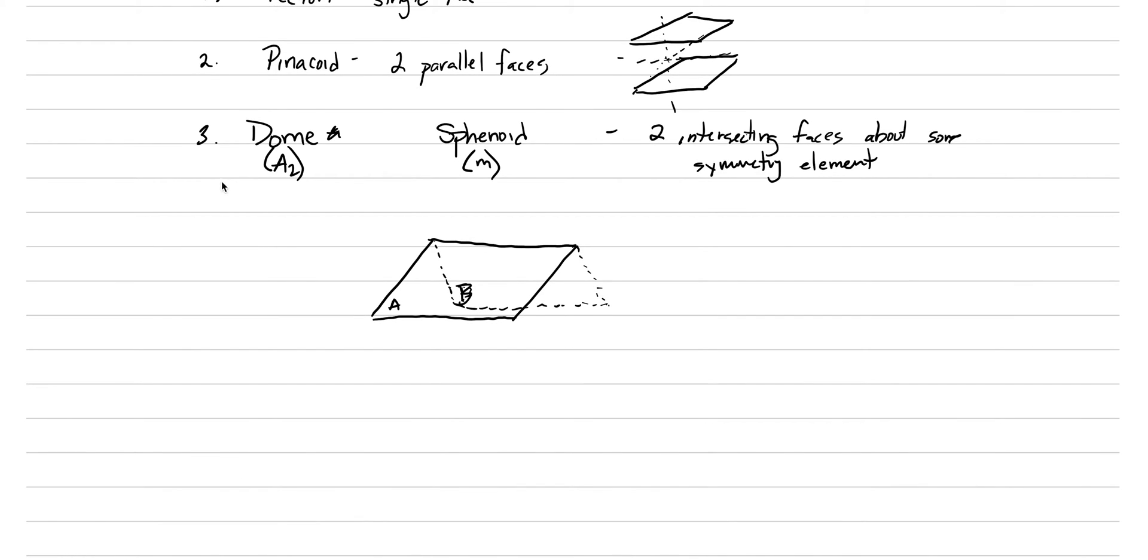The next open form to consider is one that we've seen a lot of. It is called a prism. That aquamarine above was a hexagonal prism, but prisms don't have to have six faces. Anytime that you have between three and twelve parallel faces, they're also going to be parallel to a crystal axis. So parallel to a crystal axis.